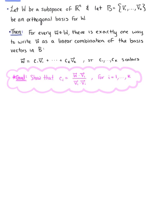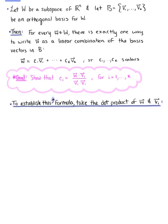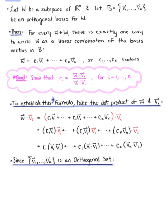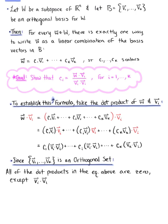And this is to hold true for all i equal to 1 through k. So in order to establish this formula, let's take the dot product of vector w with the arbitrary vector v sub i. Now we can rewrite this by distributing vector v sub i through to each term in the linear combination, and then rewriting this as a linear combination of the dot products of all the vectors in the set multiplied by the arbitrary vector v sub i.